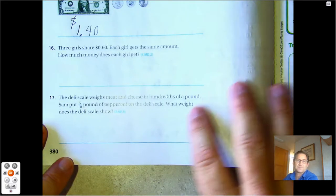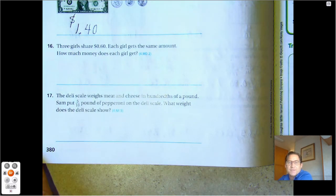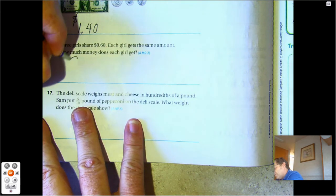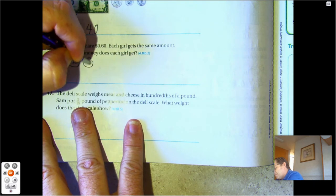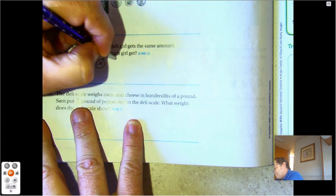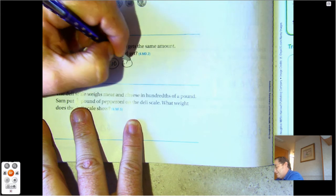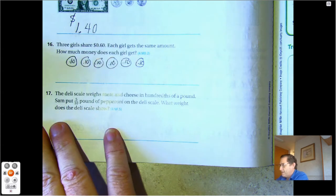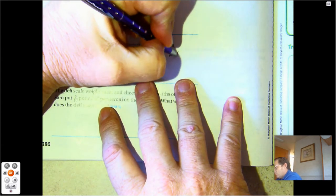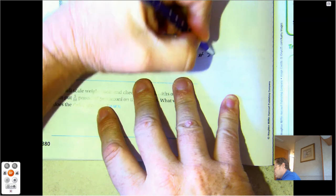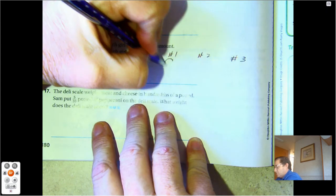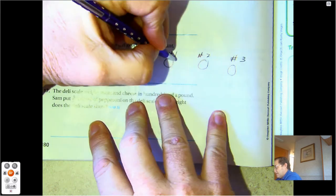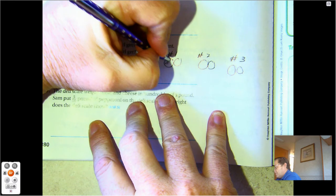Number sixteen. Three girls share sixty cents. Each girl gets the same amount. How much money does each girl get? So I could draw a picture of this. I'm going to make it into six dimes. And we have three girls. So I'll say one, two, three. So each girl can get at least one dime. And then I see I have three dimes left, so each girl will get two dimes.